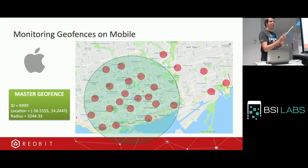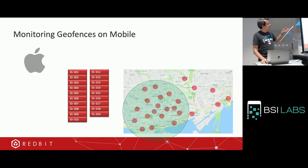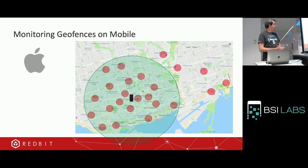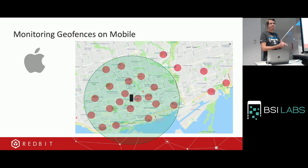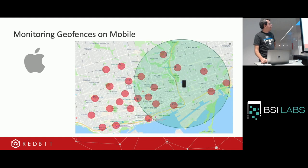We create a master geofence with an ID, a location, and a radius big enough to cover the nearest 19 geofences. Here we have the 19 geofences, and the last one is our master. When I exit the master and stay there for a time — our app only handles the enter and exit events — and if I get out, I just create a new master and grab the next closest 19 geofences. That's how we work around the limitation.